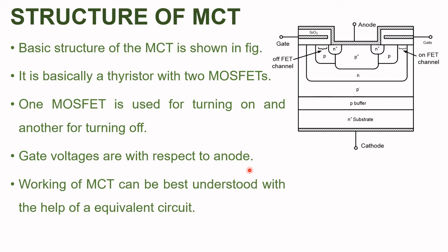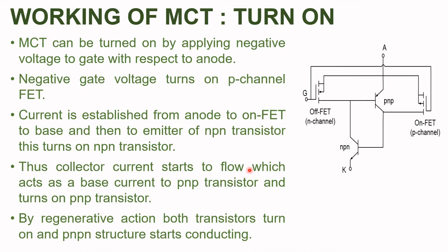Working of MCT can be best understood with the help of its equivalent circuit. The figure shows the equivalent circuit of MCT. Here, we have the two-transistor circuit of a PNPN structure. Along with that, two MOSFETs are shown which are required for the turning on and turning off operation of the thyristor.